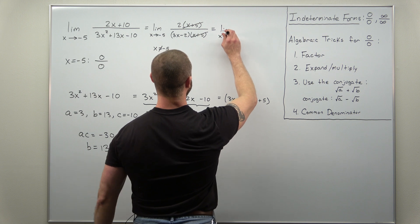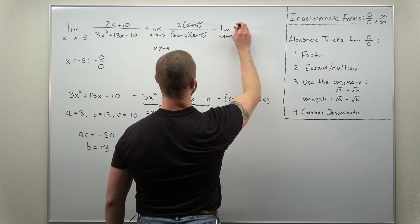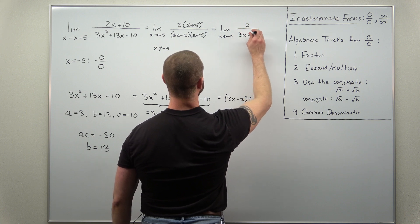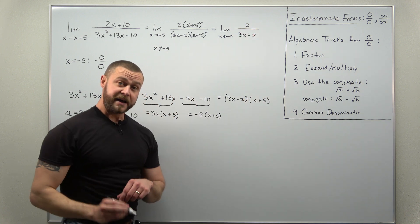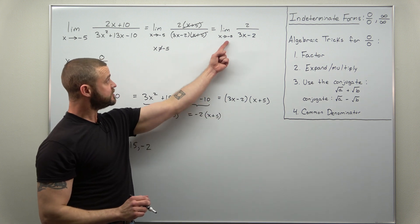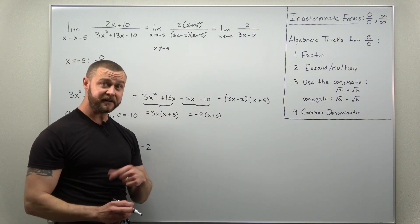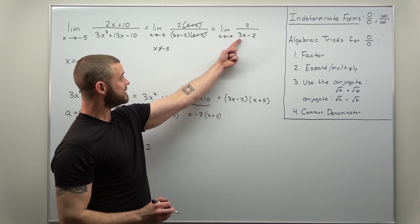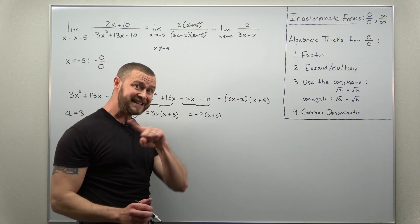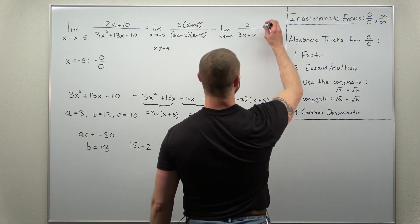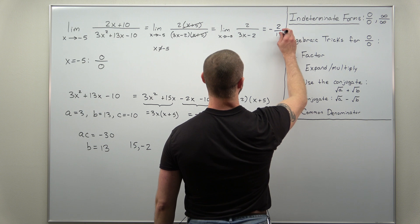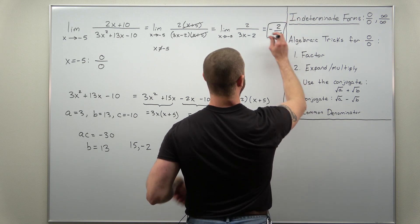The limit as x approaches negative 5 of 2 divided by 3x minus 2. At this point there's no indeterminate form. So you can just plug in x equal to negative 5 and you're going to get negative 15 minus 2. You get negative 17 in the denominator giving us a limit here of negative 2 over 17.